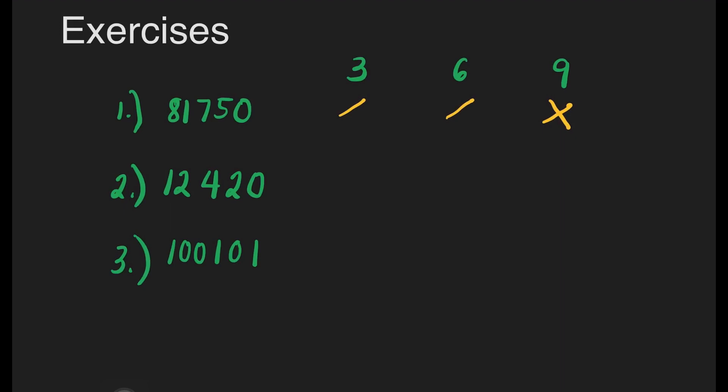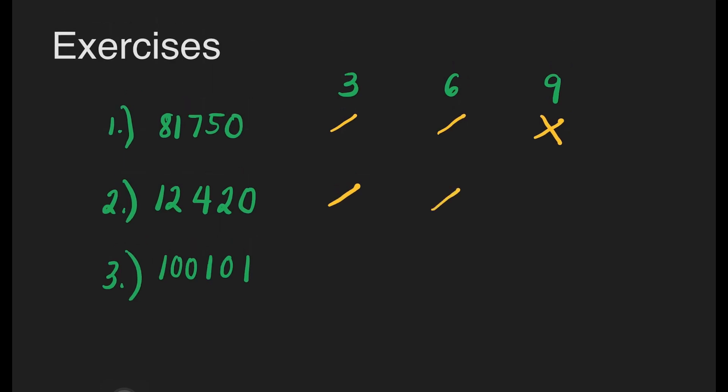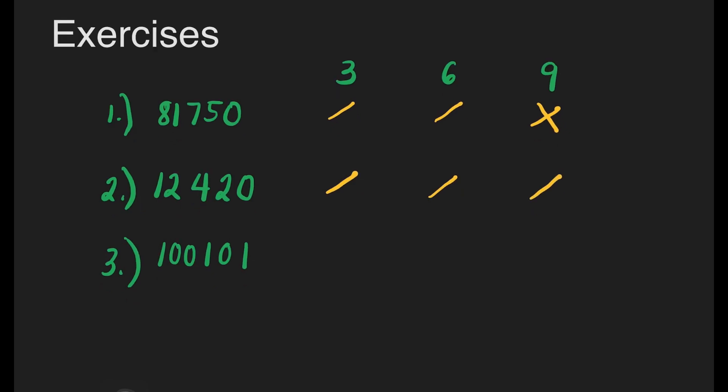Number 2: adding the digits gives 1 plus 2 plus 4 plus 2 equals 9. Since 9 divided by 3 is 3, it is divisible by 3. It is also an even number, so it is divisible by 6 as well. And since the sum is 9, which is divisible by 9, this number is also divisible by 9. Number 3: 100,101. The sum of the digits is 3, so it is divisible by 3. It is not an even number, so it is not divisible by 6. And since the sum is 3, it cannot be divided by 9, so it is not divisible by 9.